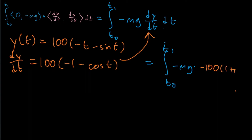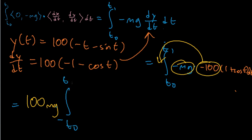Negative mg times negative 100, 1 plus cosine t dt. And these things are constant, so we can move this out here. So, this becomes 100 mg integral from t0 to t1 of 1 plus cosine t dt.